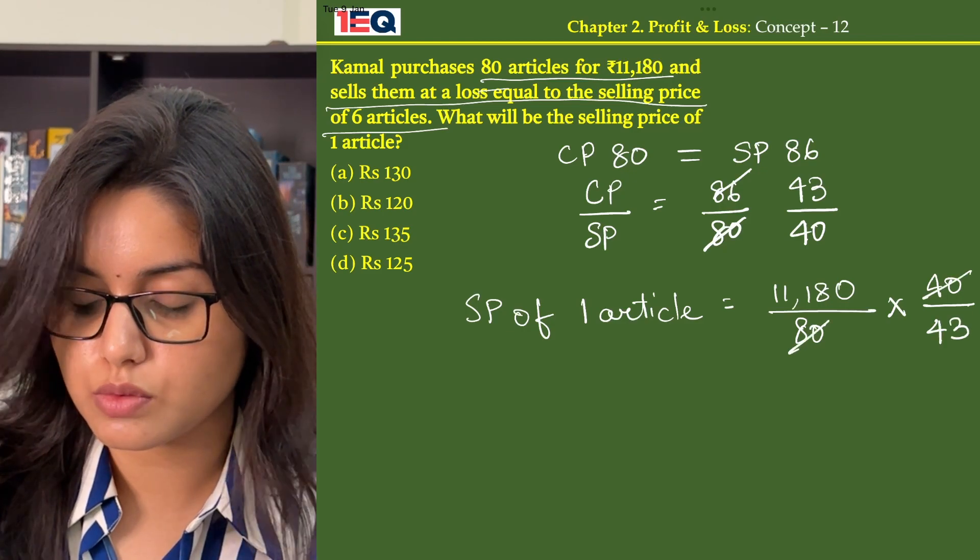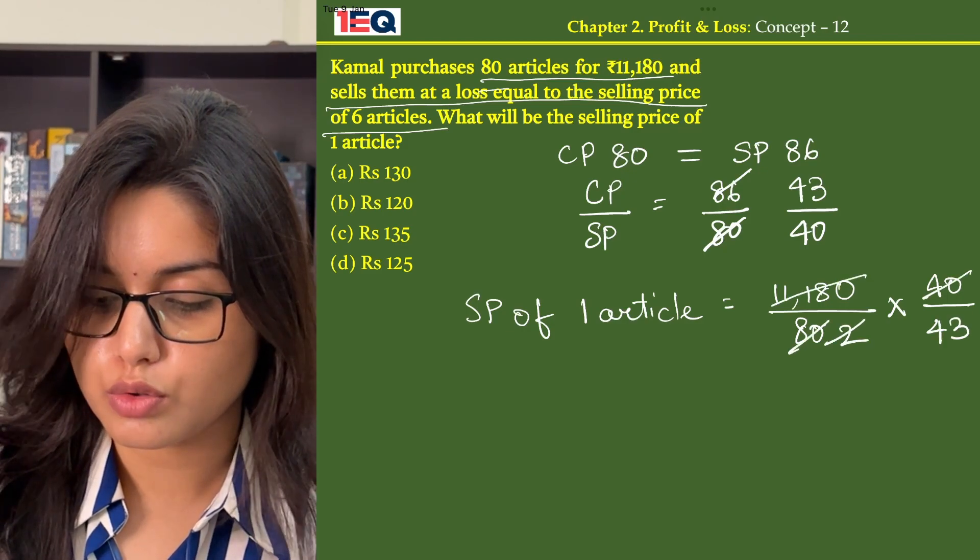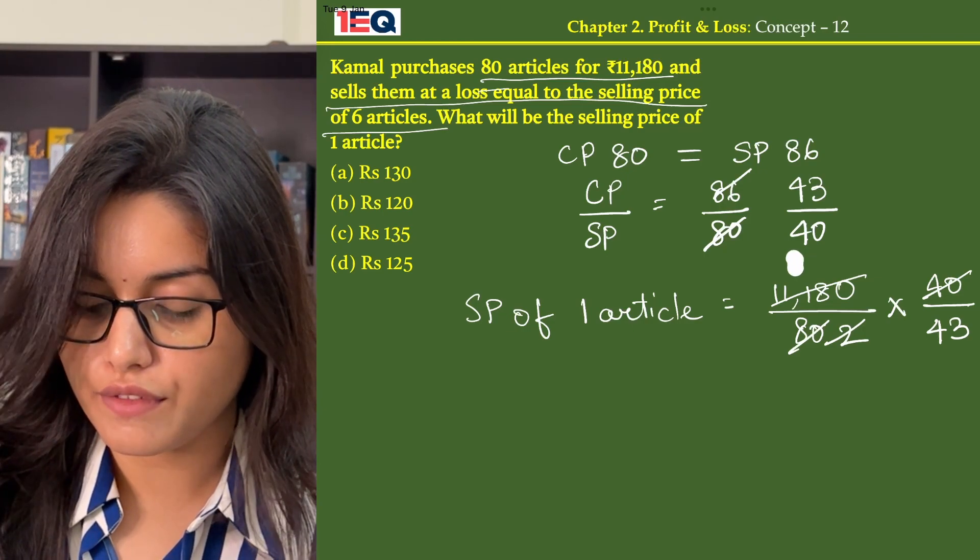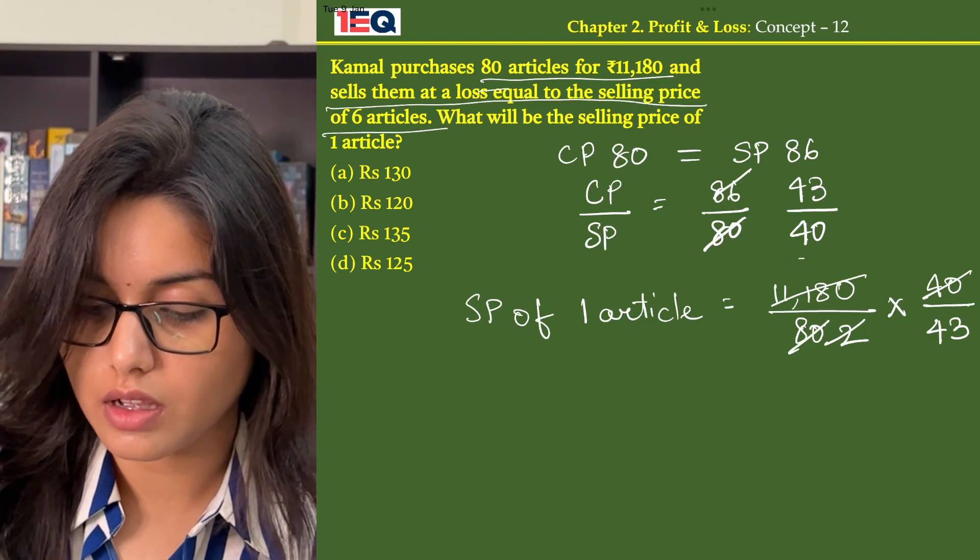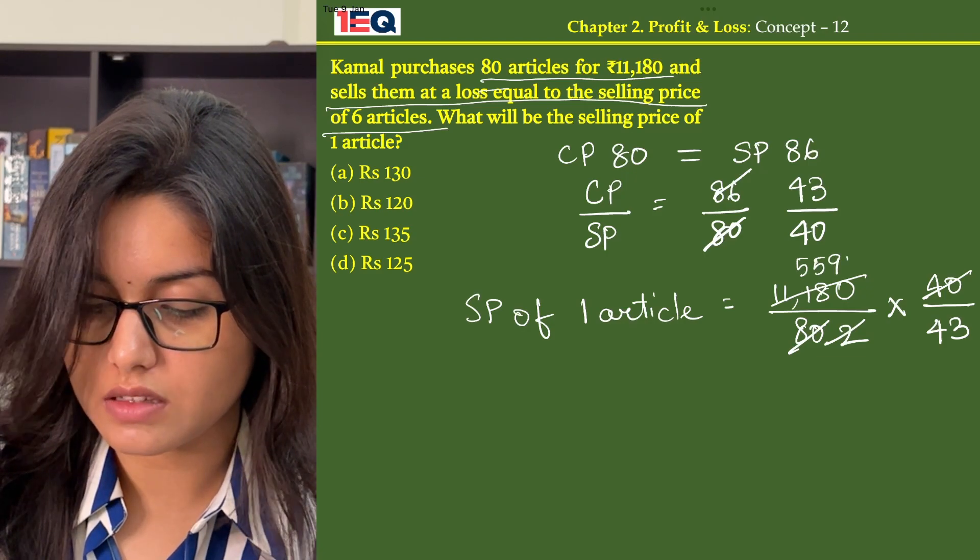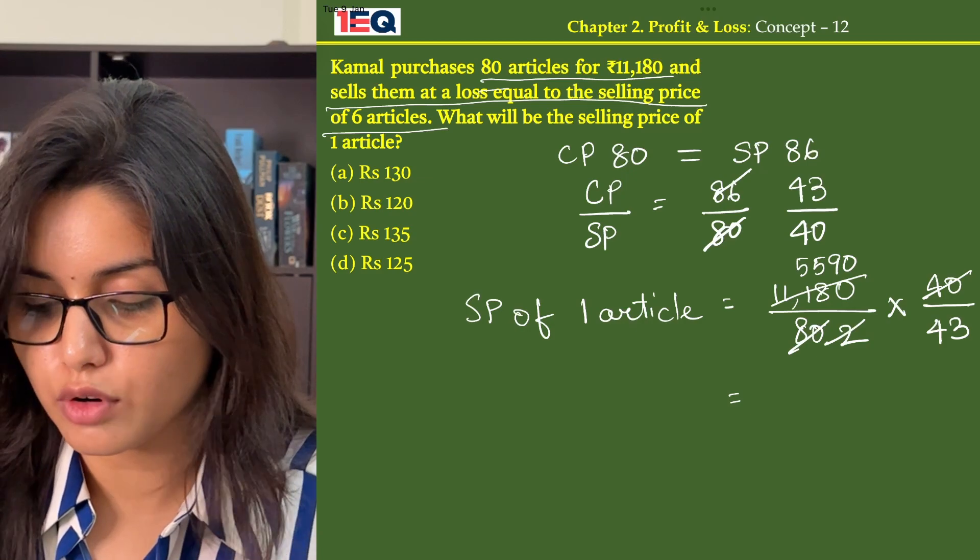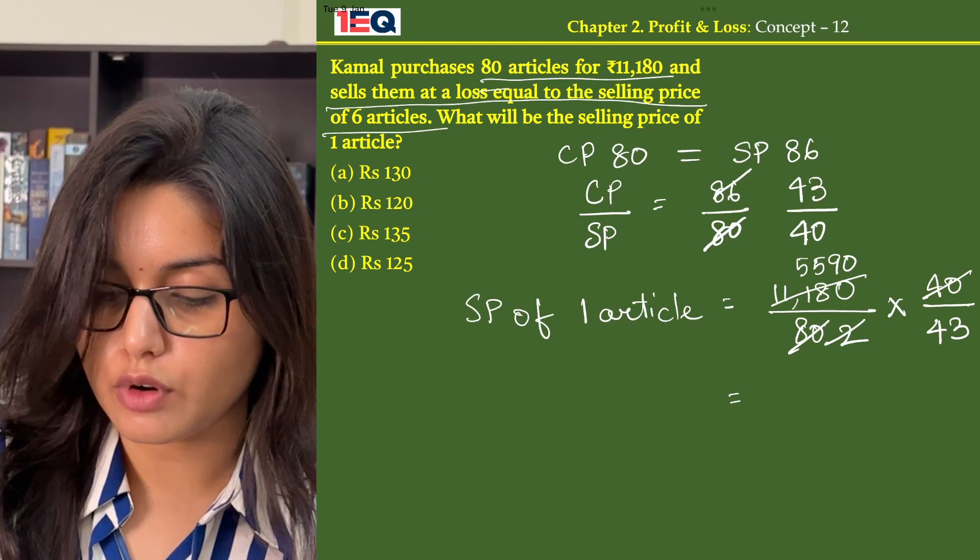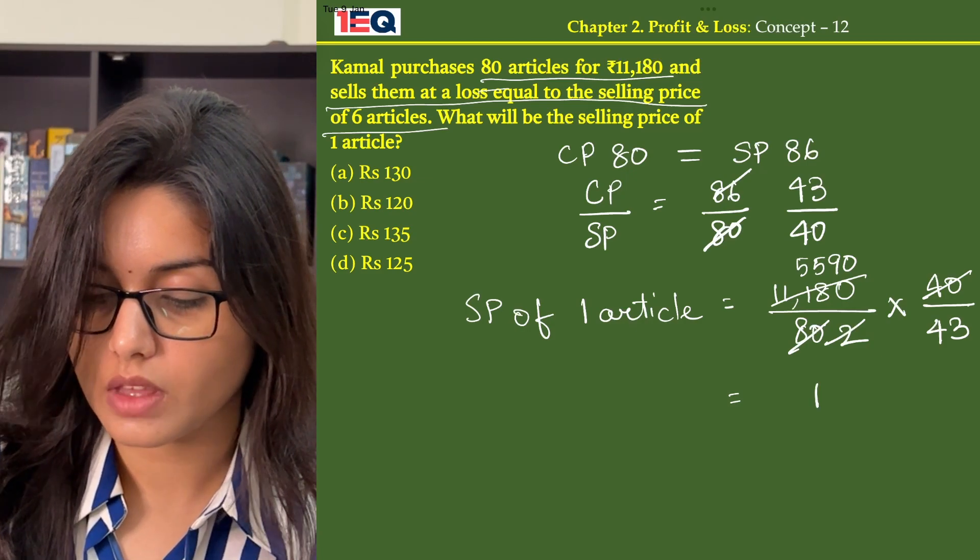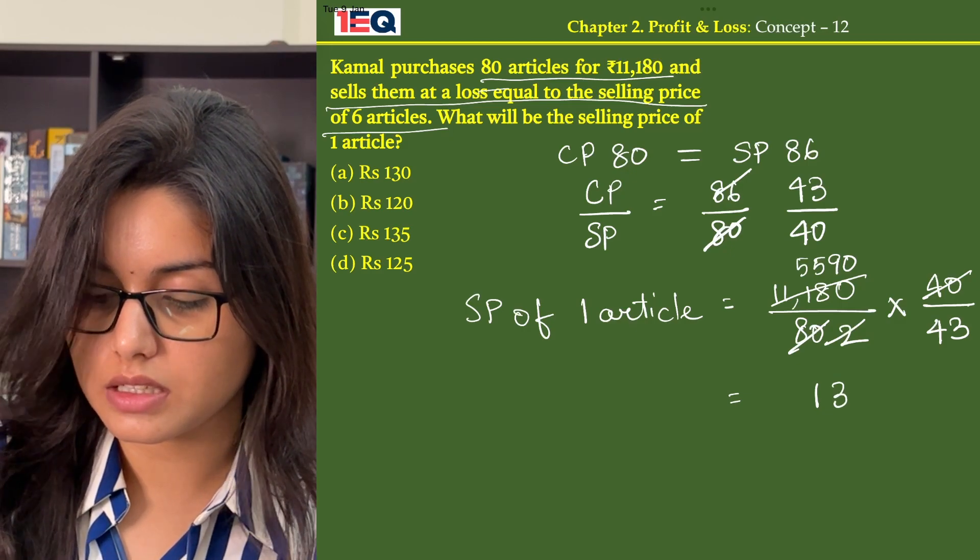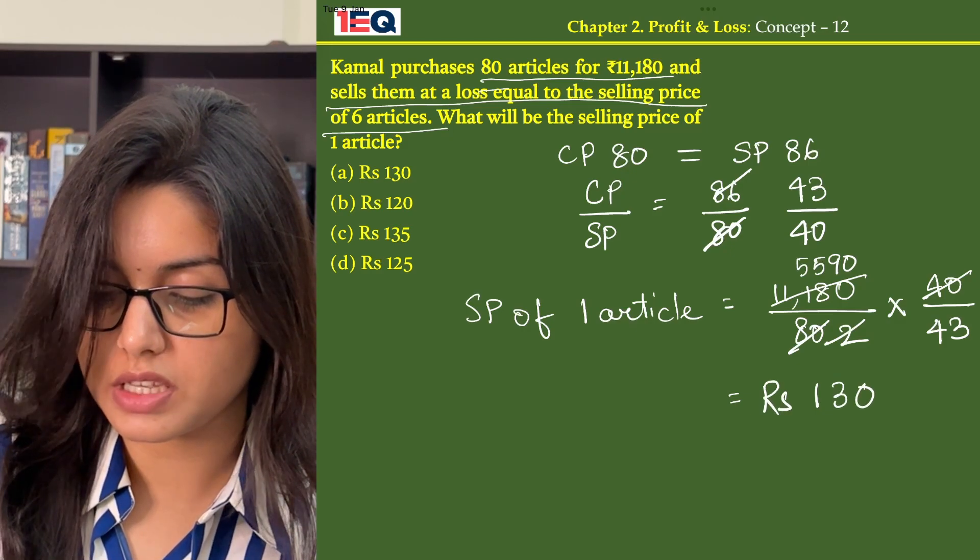80 times 2 divides into 5590. On dividing 5590 by 43, we get 43 ones, 3 is 129 and 0. So rupees 130.